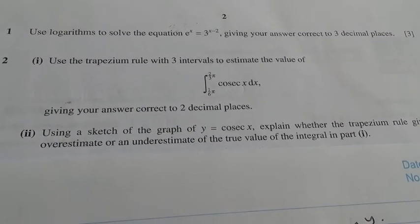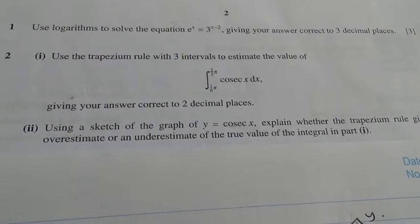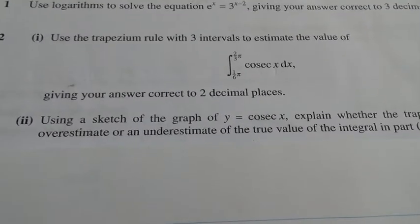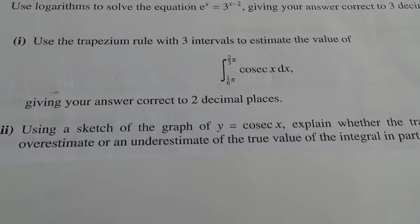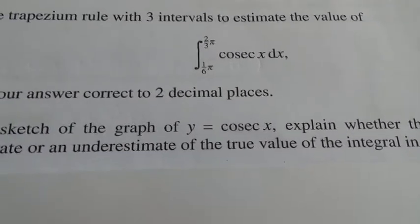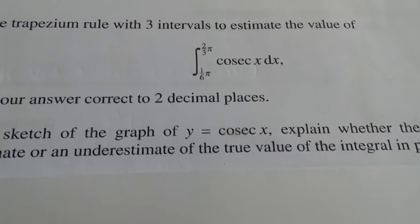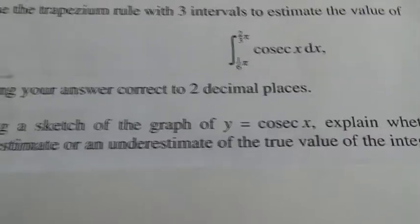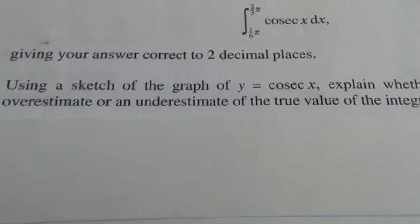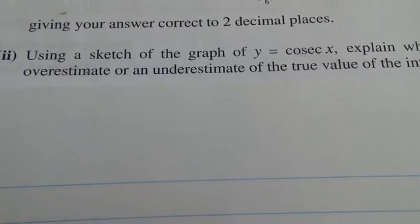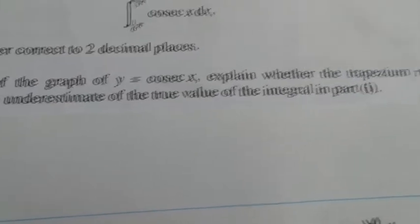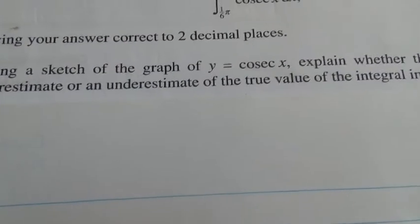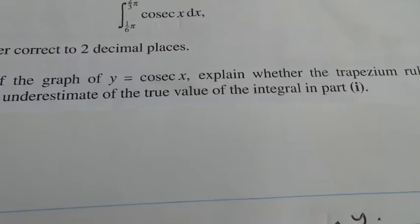Question number 2 taken from October 2014, Advanced Level Maths HSE. Use trapezoidal rule with three intervals to estimate the value of the integral of cosec x dx with limits pi upon 6 up to two-third pi, giving your answer correct to two decimal places. Second part, using a sketch of the graph of y equals cosec x, explain whether the trapezoidal rule gives an overestimate or an underestimate of the true value of the integral in part one.